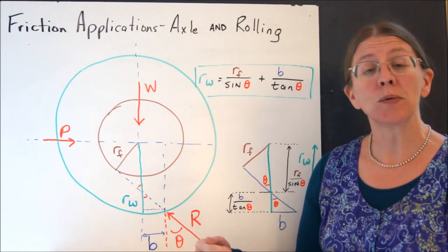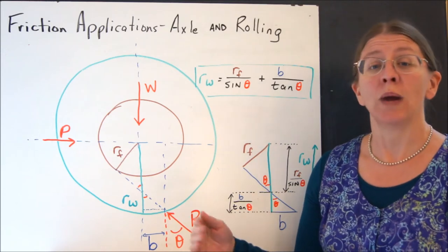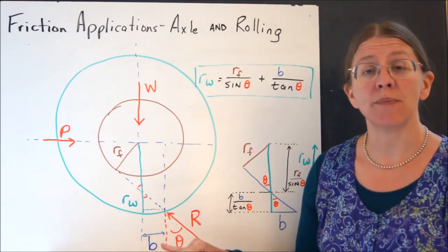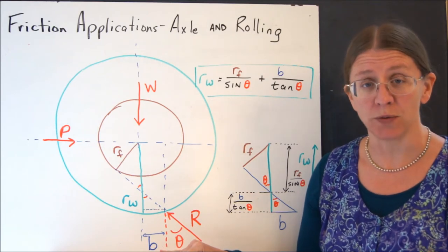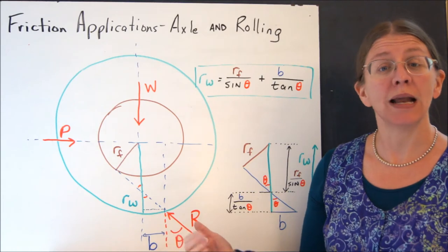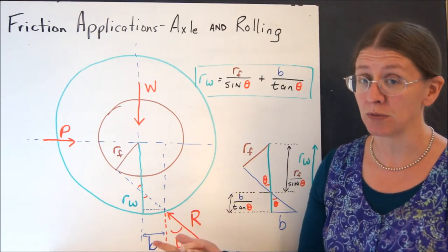It's kind of the same thing when we were dealing with friction circles. We had to actually shift the reaction so that there was something to balance the moment on the axle. What happens when we're dealing with a wheel that's rolling that has both axle friction and rolling resistance?